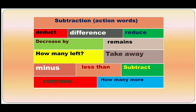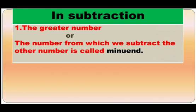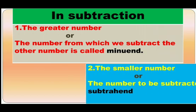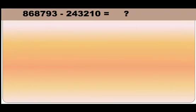Now, let us understand the terms associated with subtraction. In subtraction, the greater number or the number from which we subtract the other number is called minuend. The smaller number or the number to be subtracted is called subtrahend. Let us make it more clear with the help of this example.